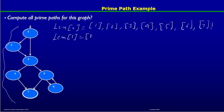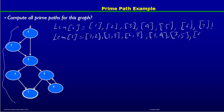Now we need to find the paths of length 1. Starting from node 1 these can be [1,2] and [1,3]. From node 2 we have [2,3]. From node 3 we have [3,2], [3,4], and [3,5]. From node 4 we have one path of length 1: [4,7]. From node 5 we have [5,6] and [5,7]. From node 6 we have [6,5].